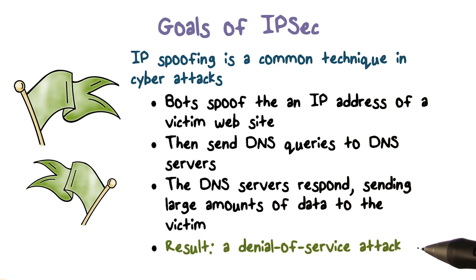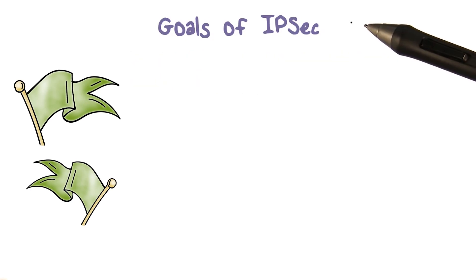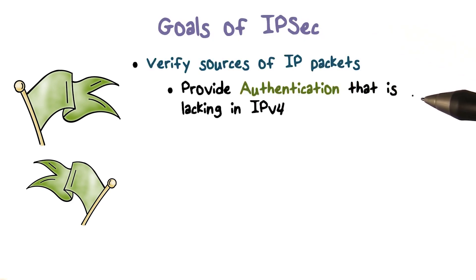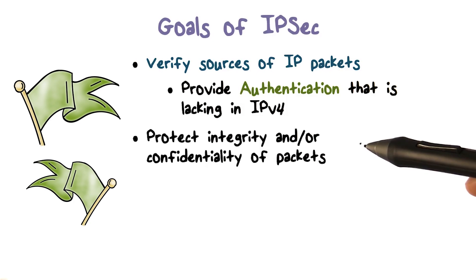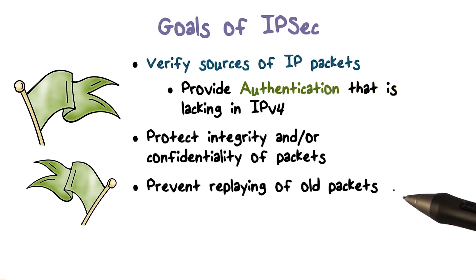This would result in a denial of service at the victim website. IPsec provides security measures at the IP layer. These include authentication of source IP addresses, confidentiality and integrity protection of packet data, and authenticity of packet data — in particular, preventing replay of packets.